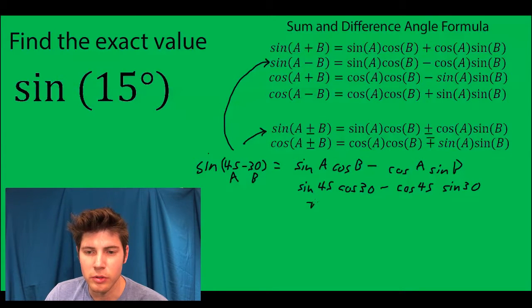Sin 45 is √2/2, cos 30 is √3/2, cos 45 is √2/2, and sin 30 is 1/2.